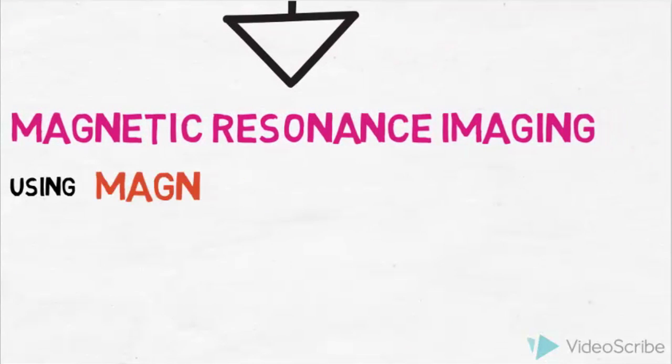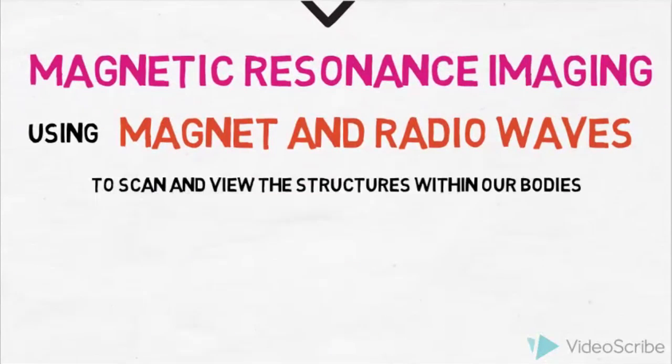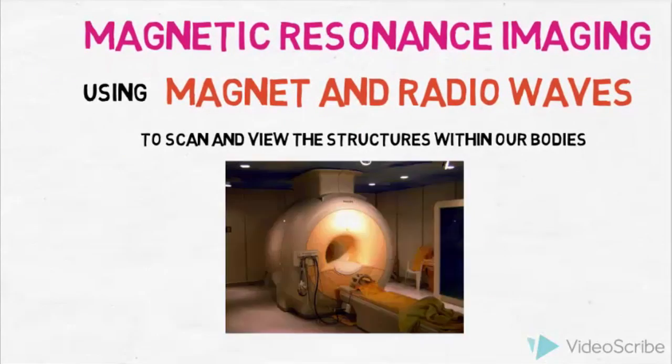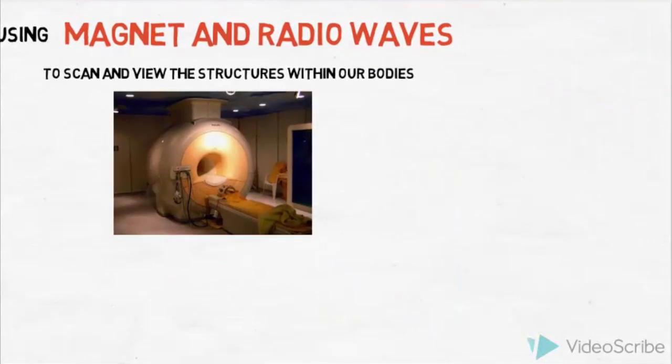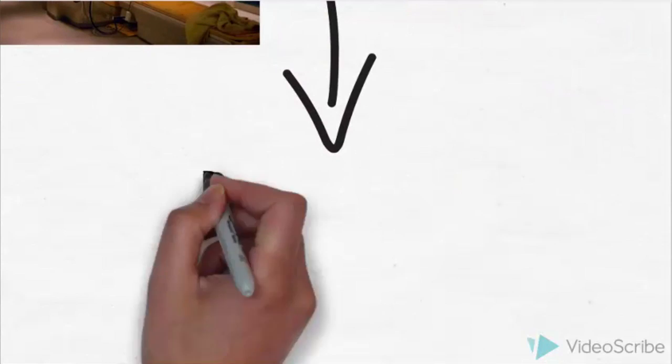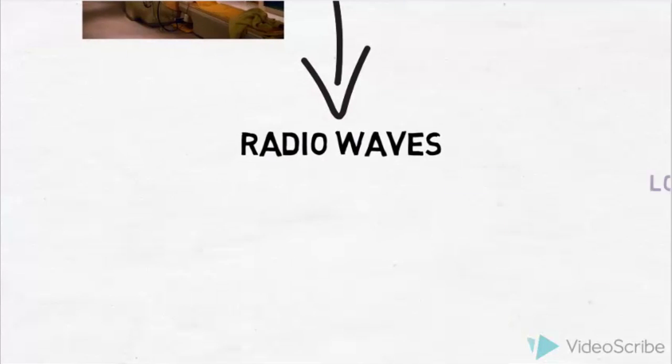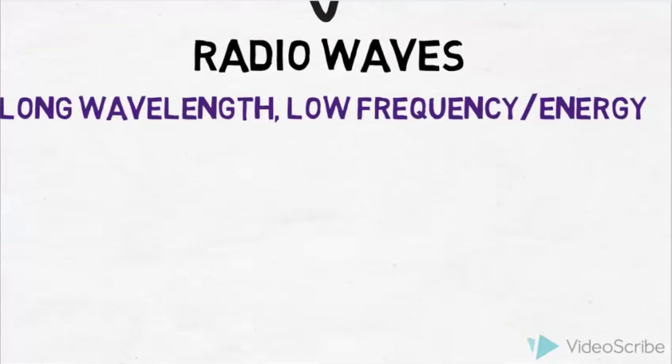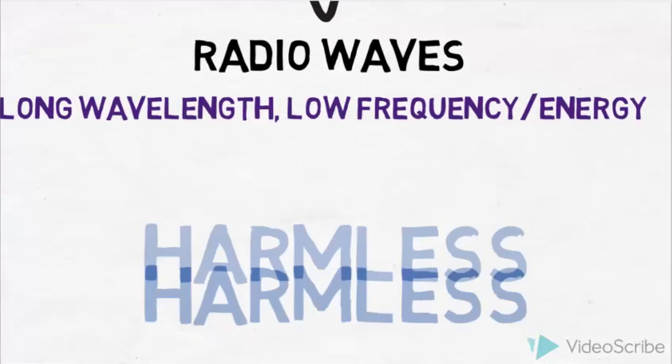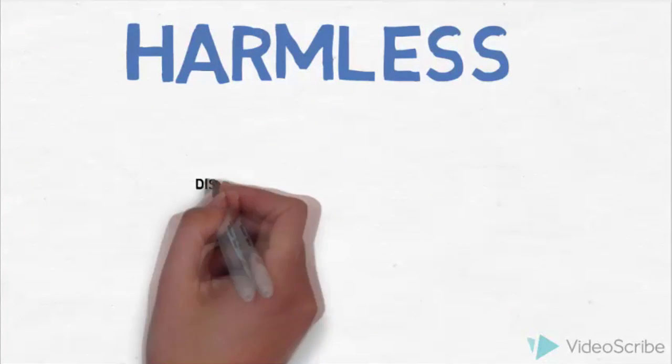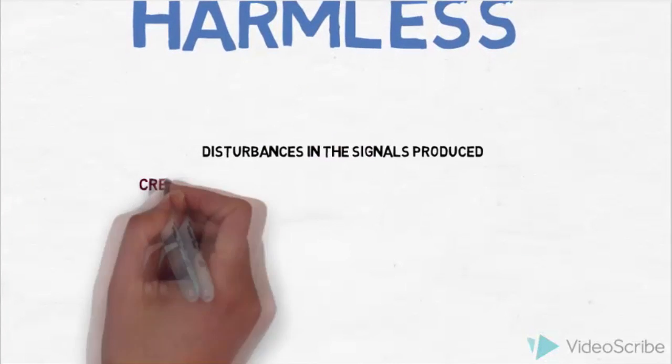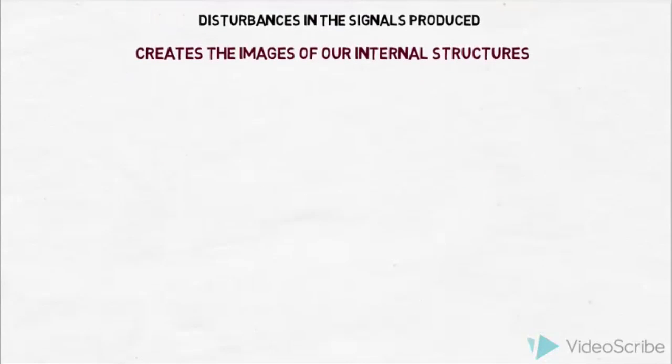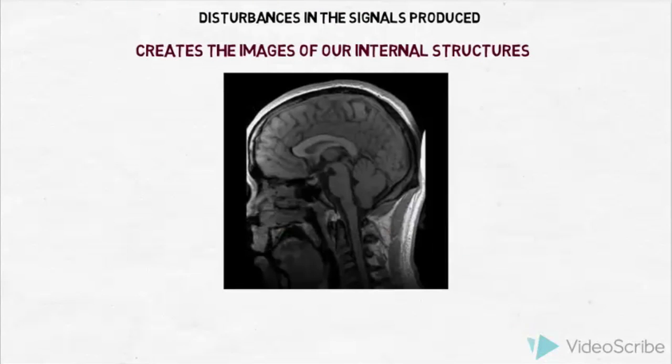This technology uses magnet and radio waves to scan and view the structures within our body we cannot view physically. The radio waves inside the MRI scanners are long wavelength, low frequency, and energy waves, which is harmless to the body. The disturbances in the signals produced by our internal organs help create the images, and we can see if any diseases or abnormalities are present.